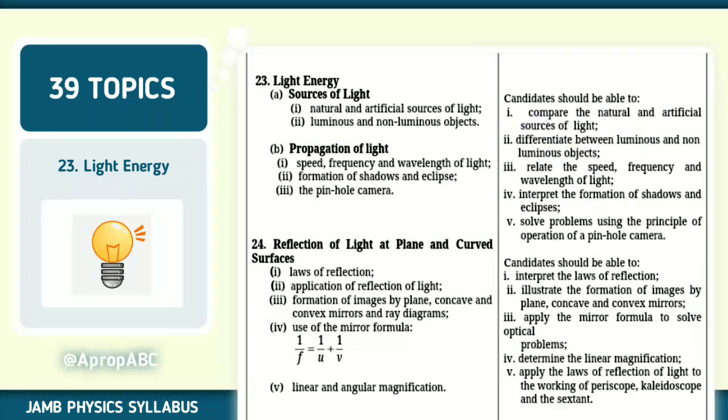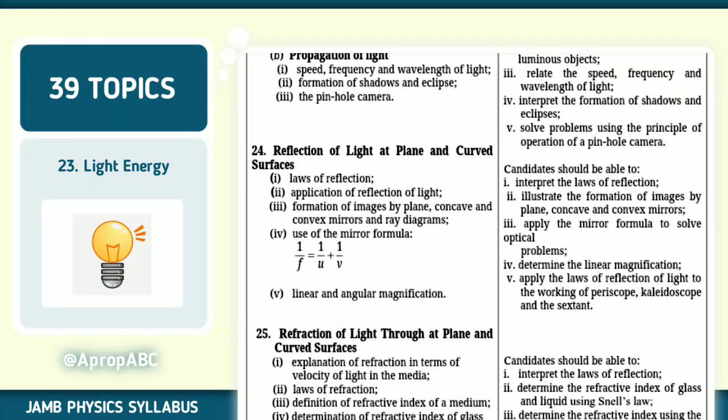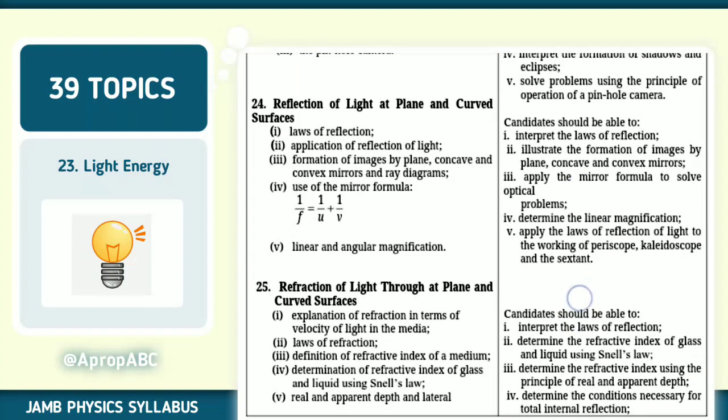Number 23, we have light energy out of 39. You need to know the source of this light and also how this light is being propagated. Note pinhole camera, formation of shadows and eclipse. Note that.